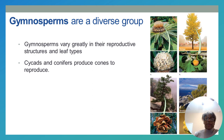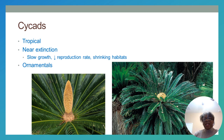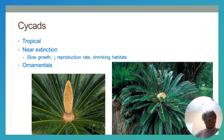Gymnosperms are a very diverse group, varying in reproductive structures and leaf types. We'll look at cycads and conifers, which produce cones to reproduce. Cycads tend to live in tropical areas, grow very slowly, and are near extinction with shrinking habitats. They are considered ornamental plants — decorative. The two characteristics to remember about cycads: they are tropical and ornamental.